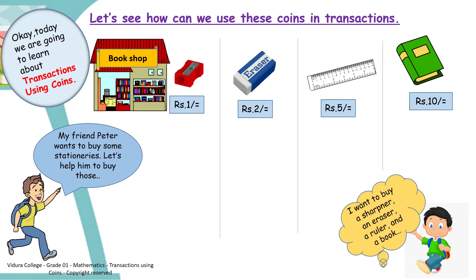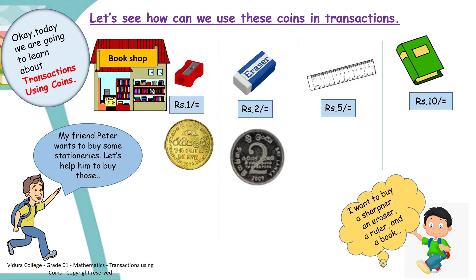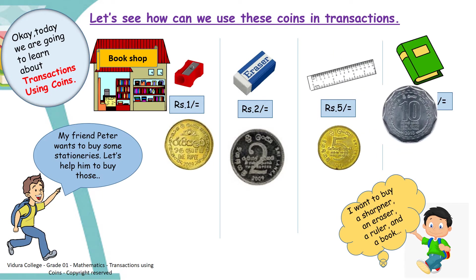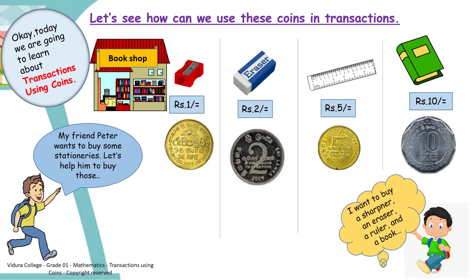Let's see what coins Peter should use to buy these things. Using a 1 rupee coin, he can buy a sharpener. Using a 2 rupees coin, he can buy an eraser. Using a 5 rupees coin, he can buy a ruler. And using a 10 rupees coin, he can buy a book. Now he can buy all these things using these coins.